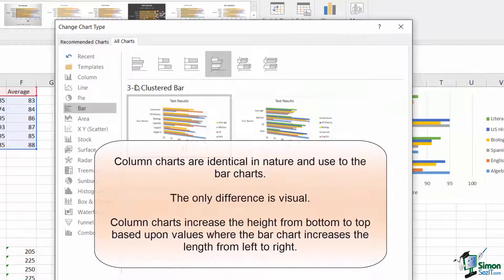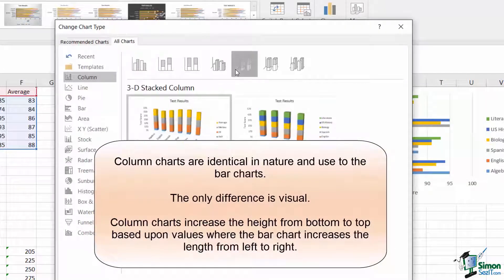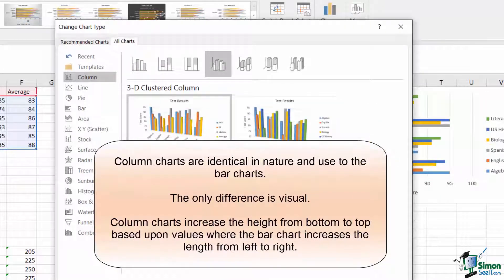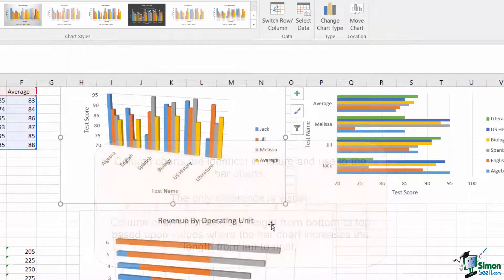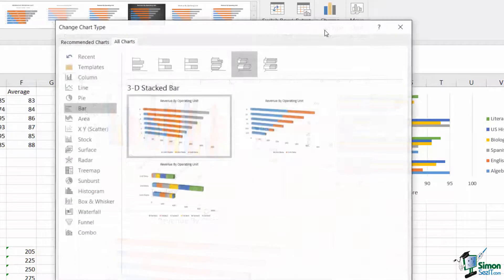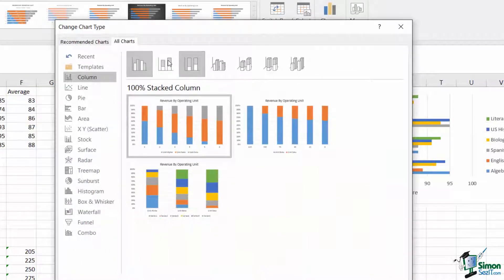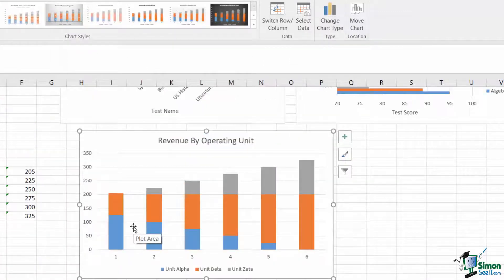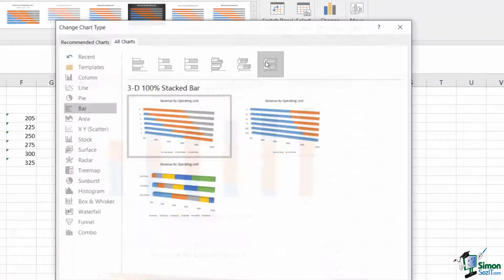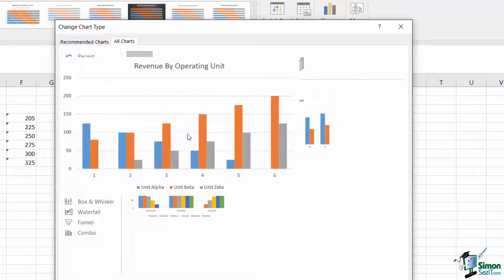The choice to use bar charts versus column charts is largely a personal choice as well, since they are easily interchangeable. Column charts come in each of the same categories as well, with clustered, stacked, and 100% stacked. The only difference is that instead of being aligned vertically, they get aligned horizontally.